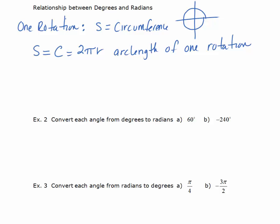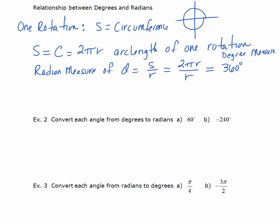The radian measure of the angle cut by one rotation equals s over r. Since the arc length of one full rotation is 2πr, the radian measure equals 2πr over r. We also know that the degree measure of one full rotation is 360 degrees. So 2πr divided by r — the r's cancel — equals 360 degrees. We can now use this to come up with a conversion factor.